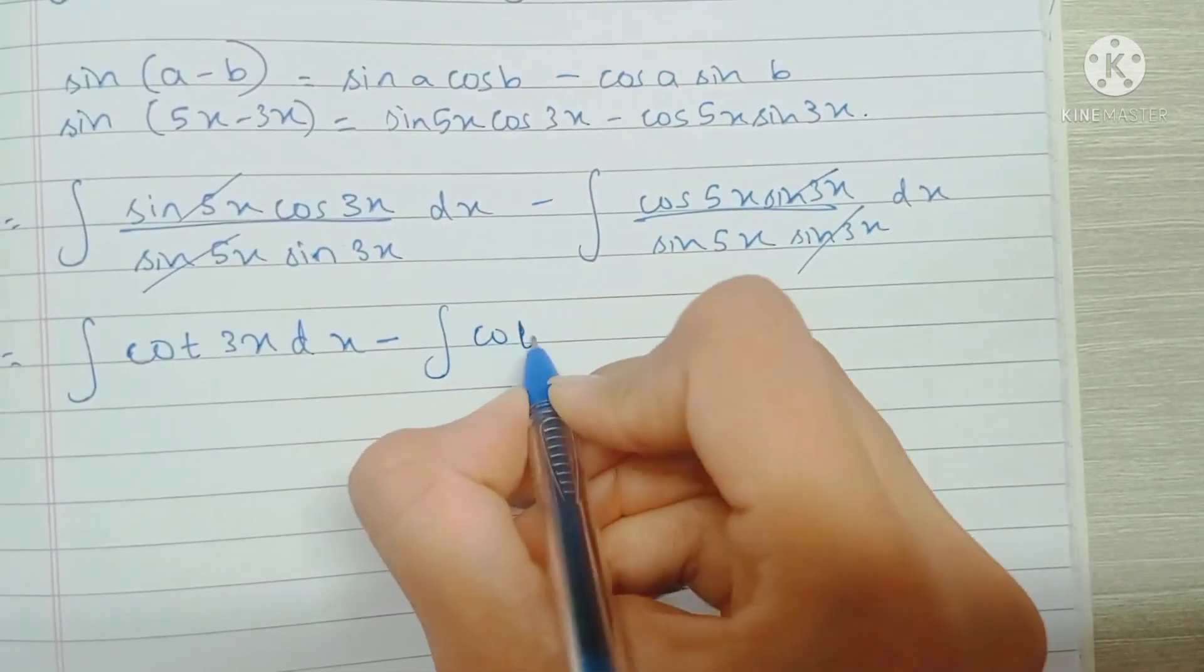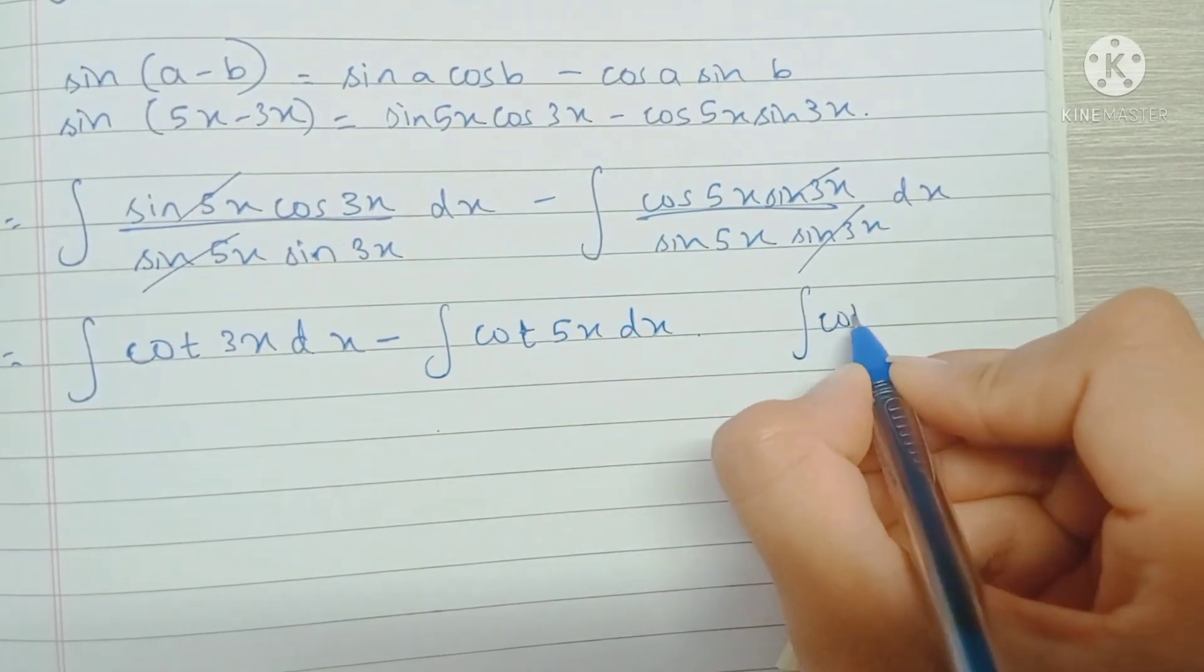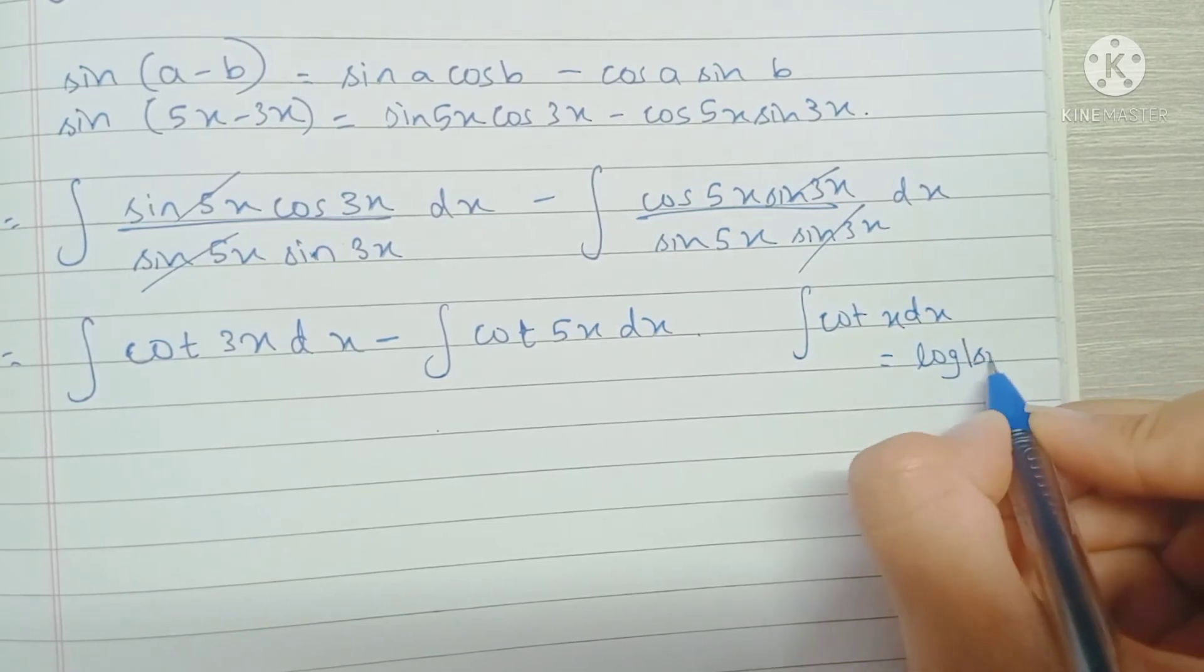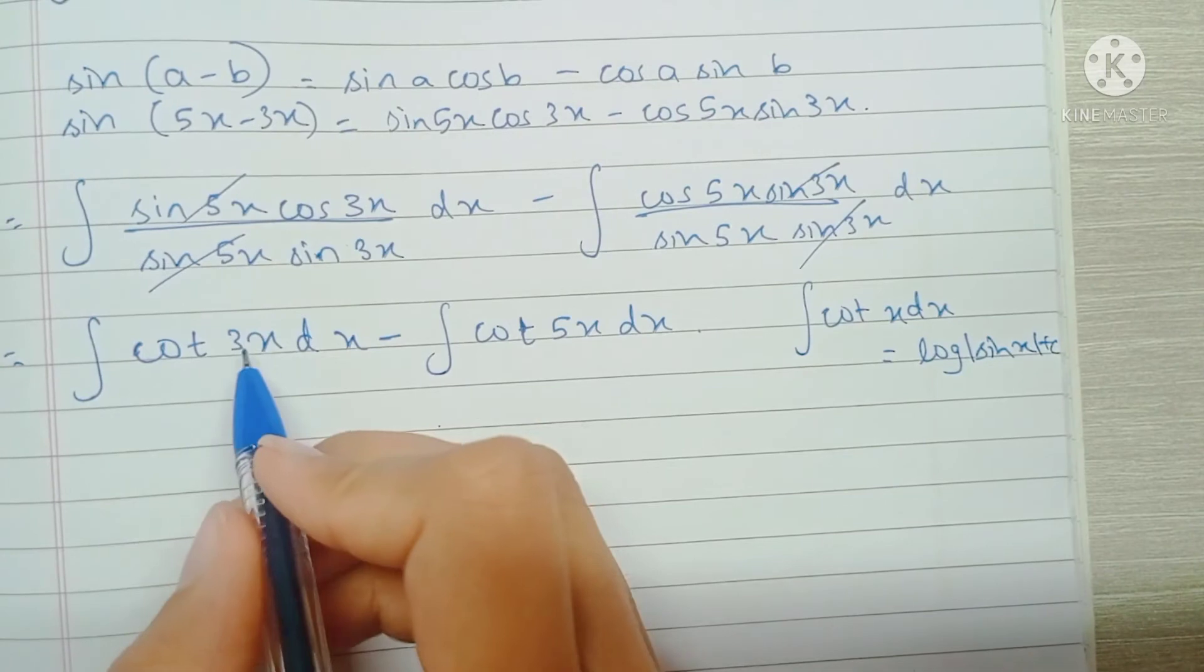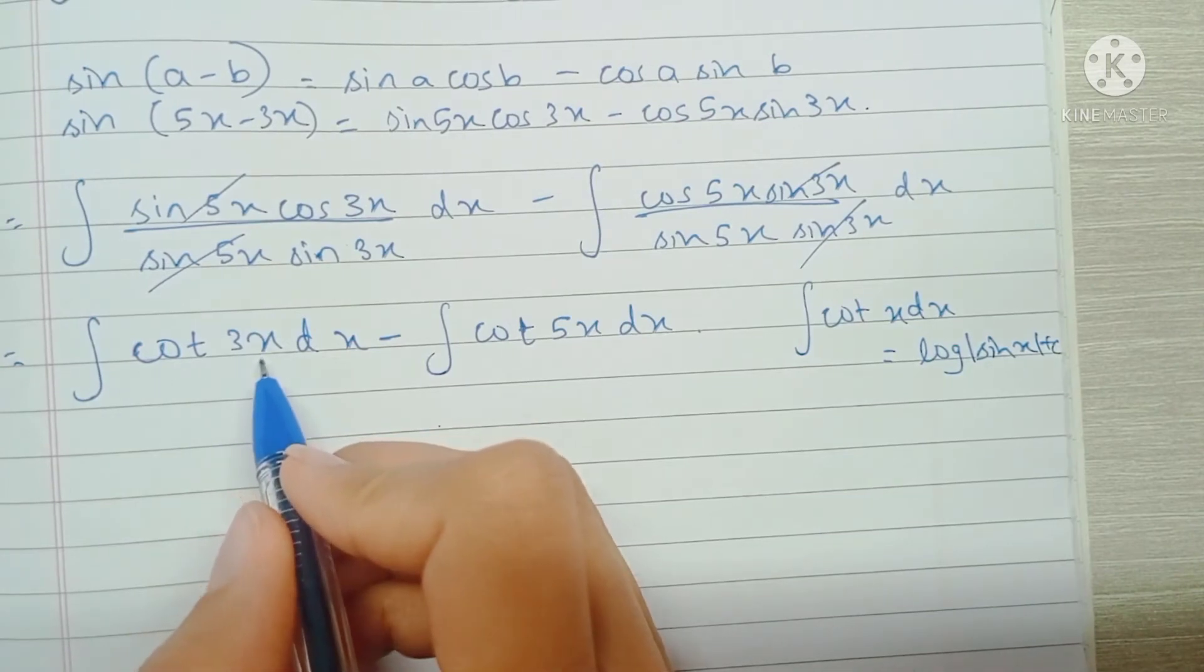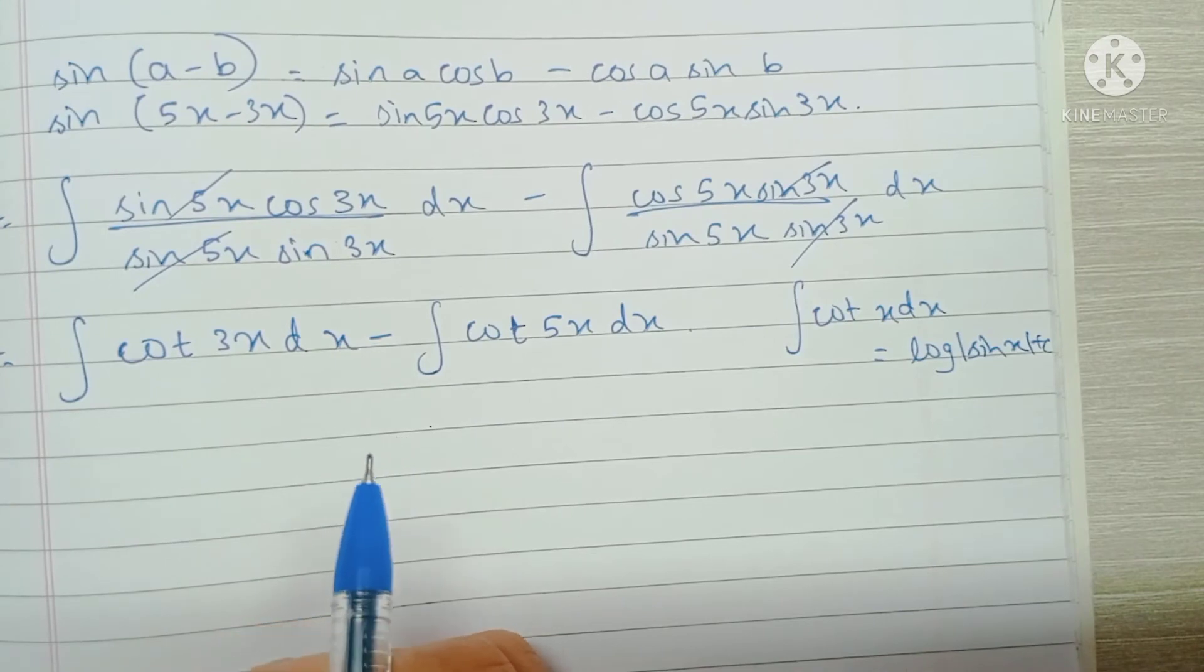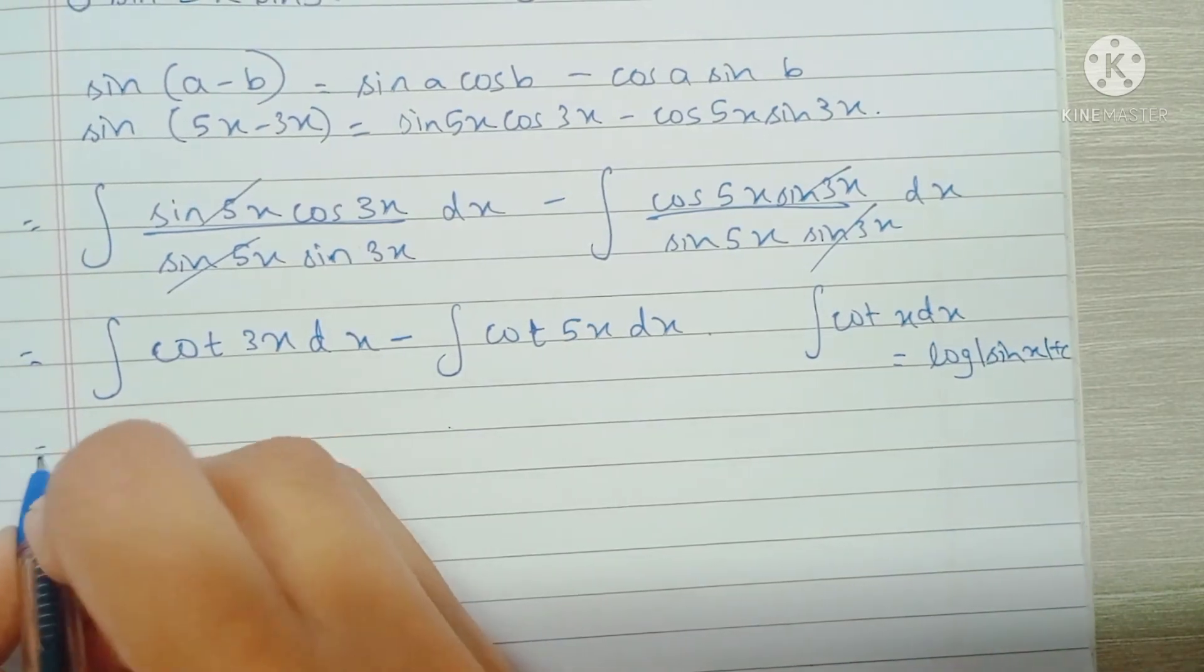And now we directly apply the formula for the integration of cot x dx, which is log mod of sin x plus c. In this case, because the coefficient of x is not 1, we will have 1 upon the coefficient of x into log mod of sine whatever the respective angle is.